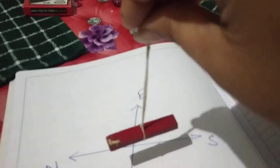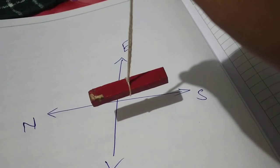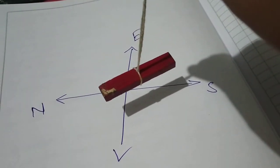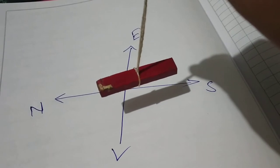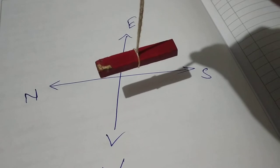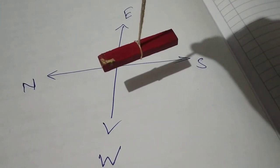Now you can see when I have lifted the bar magnet to a particular height, one end is pointing towards the north and the other is pointing towards the south. I have already marked the north, south, east, west according to my geographical location.